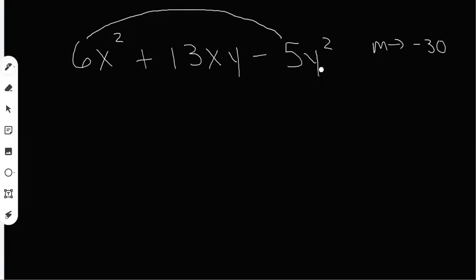What do I need to add up to? I'm always going to be adding up to the middle number, 13. So I need to find two numbers that multiply to negative 30, but at the same time add up to 13.